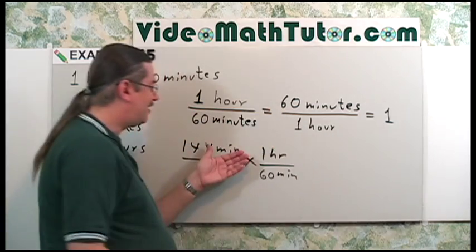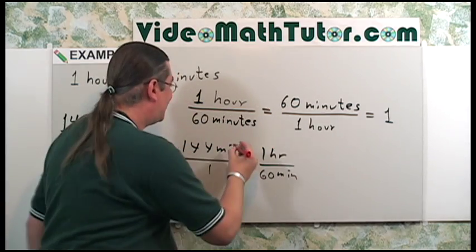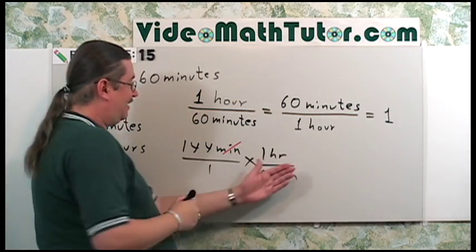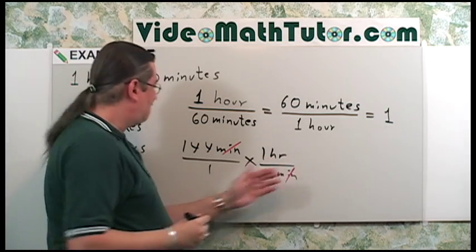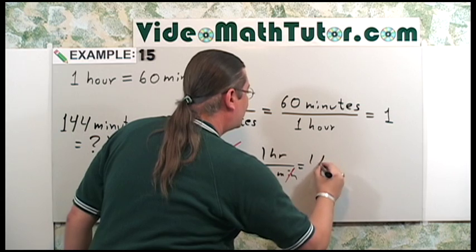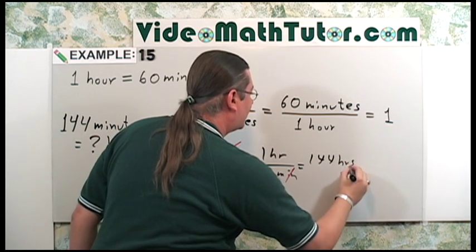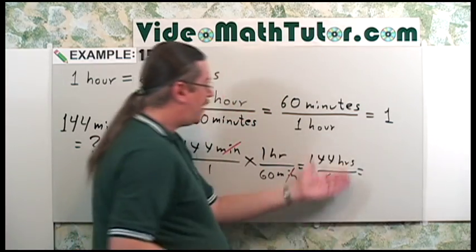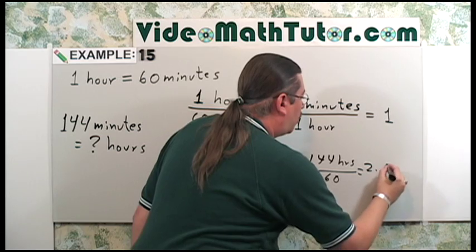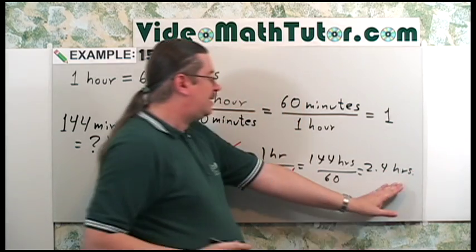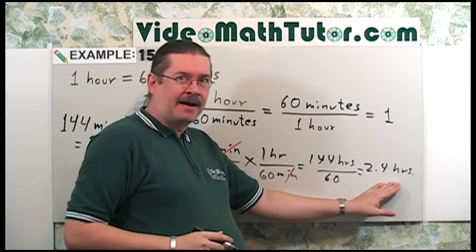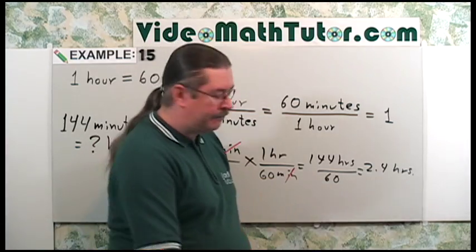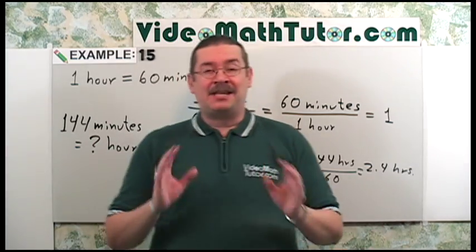So now the minutes on top will cancel with the minutes on the bottom, and you're left with hours. Let's multiply straight through. I'm going to get 144 hours divided by 60, which gives you 2.4 hours. Now, if this was a really nasty looking decimal, I would make it a fraction. In this case, 2.4 is pretty easy to work with. So let's leave it like that. And with this in mind, let's continue solving our problem.